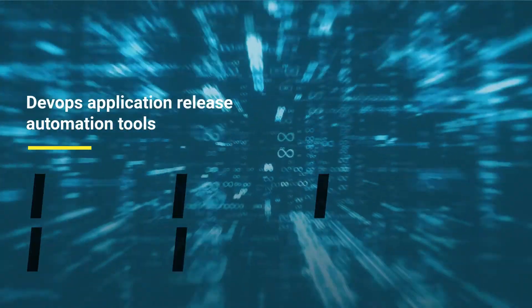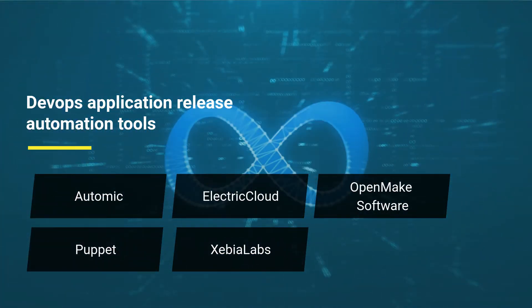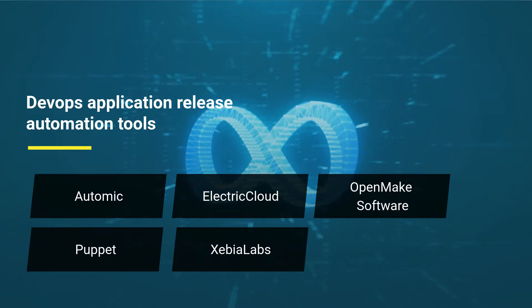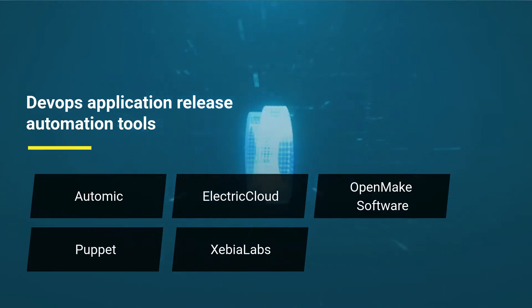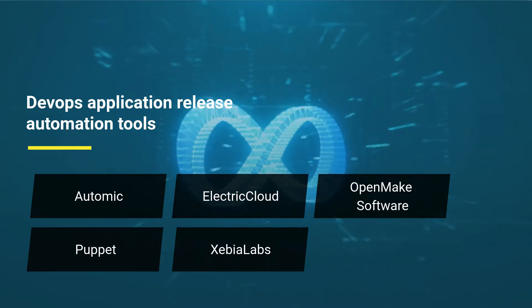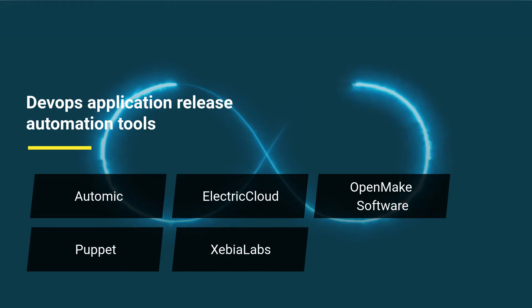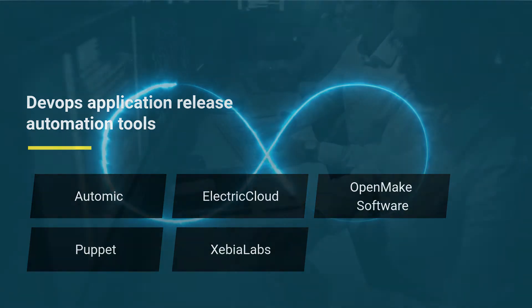DevOps Application Release Automation Tools: first, Atomic; second, Electric Cloud; third, OpenMake Software; fourth, Puppet; fifth, XebiaLabs.